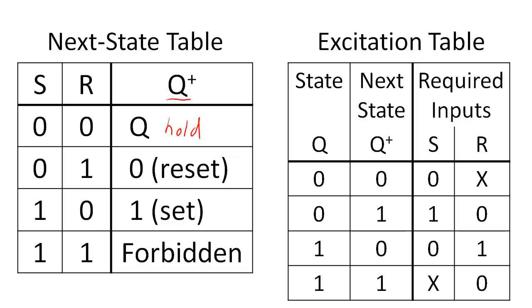We use the second table when we know our current state and our desired next state. The right columns tell us what input combinations will allow us to excite the desired next state given the current state.